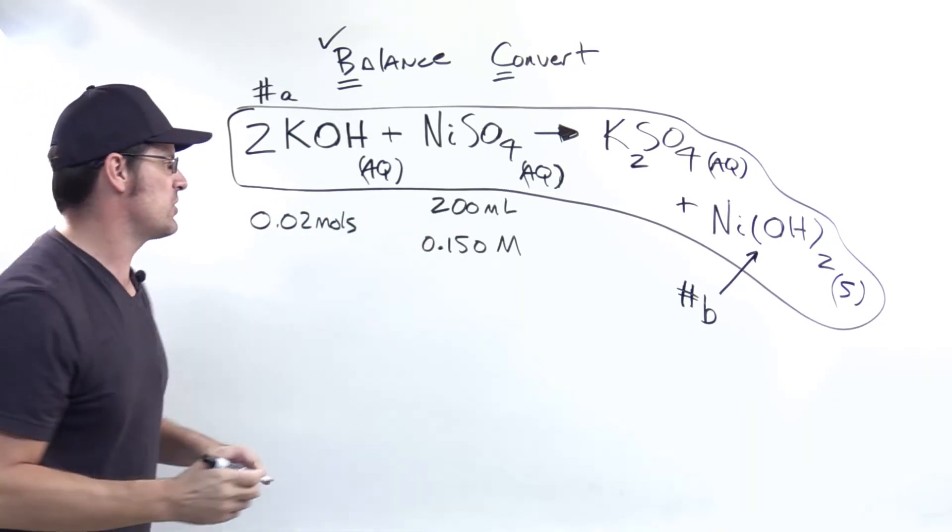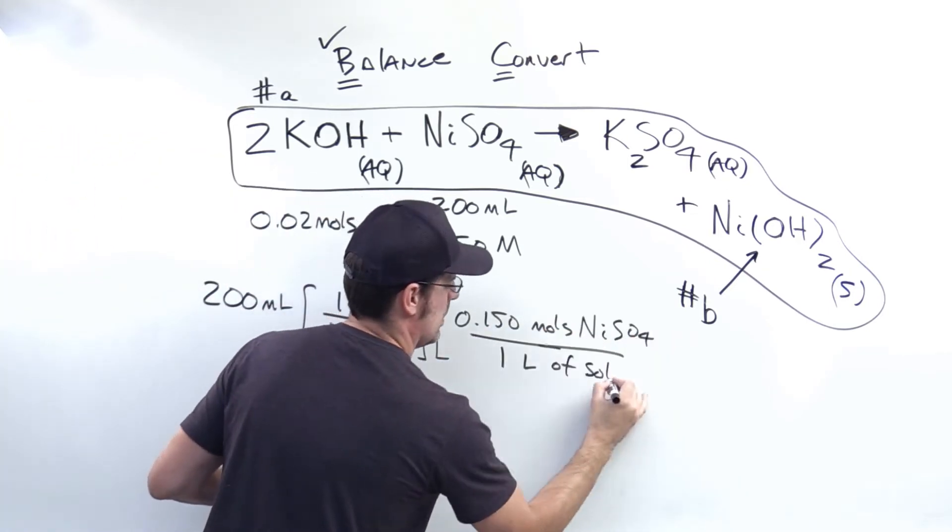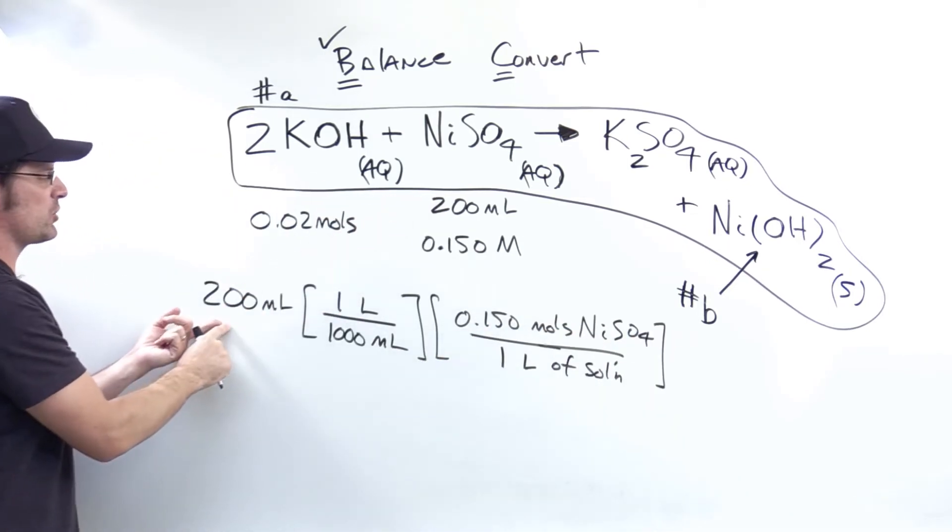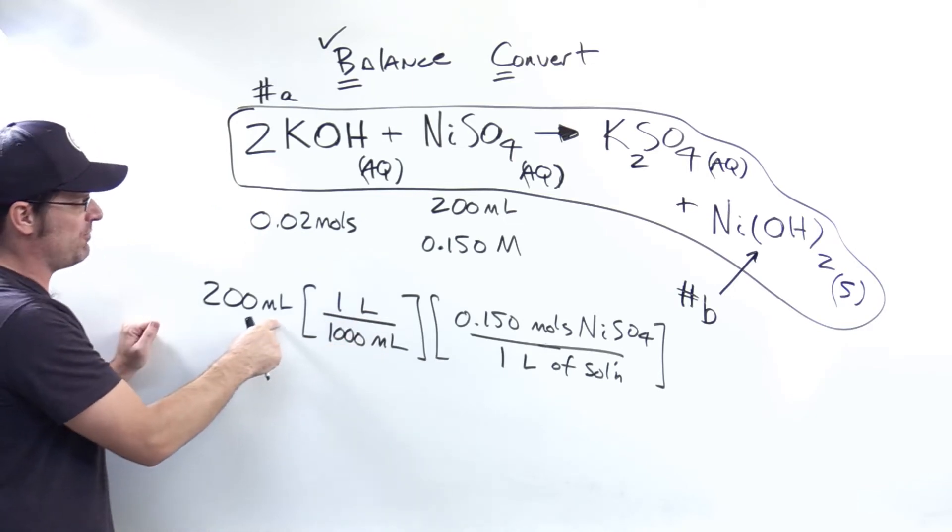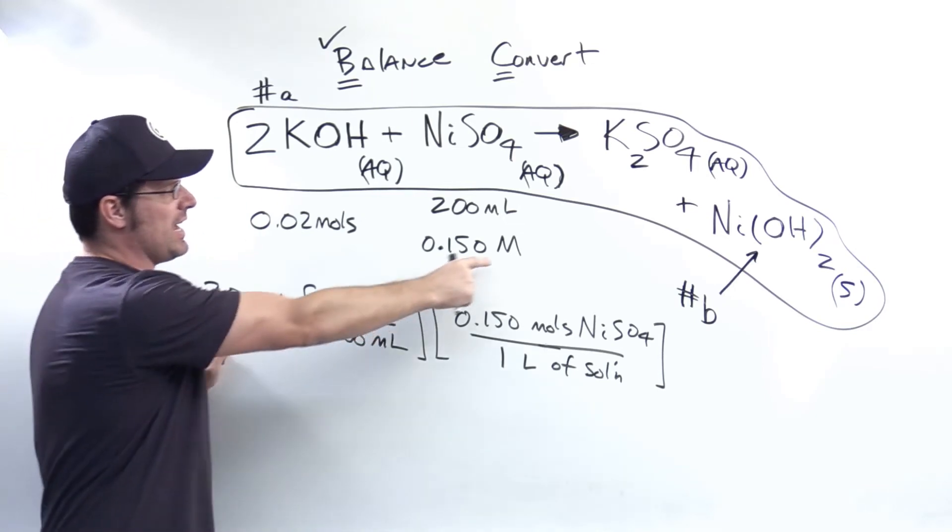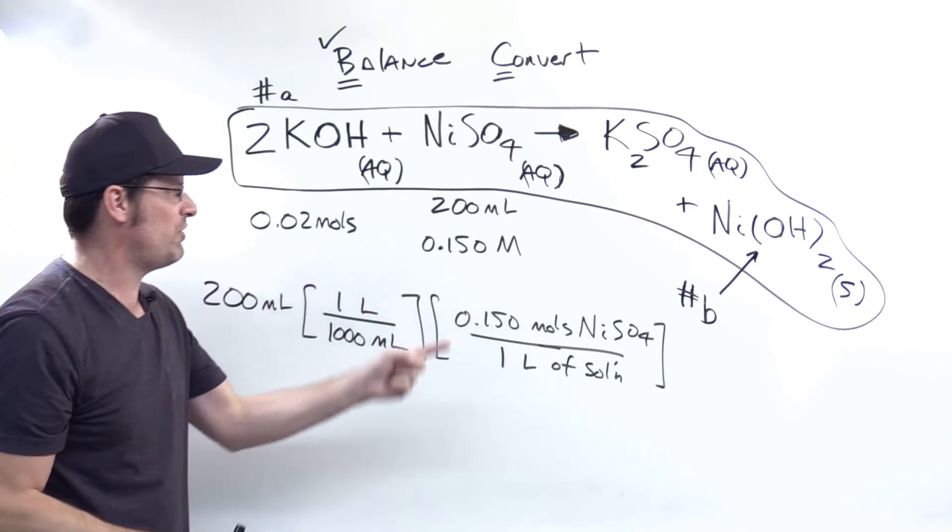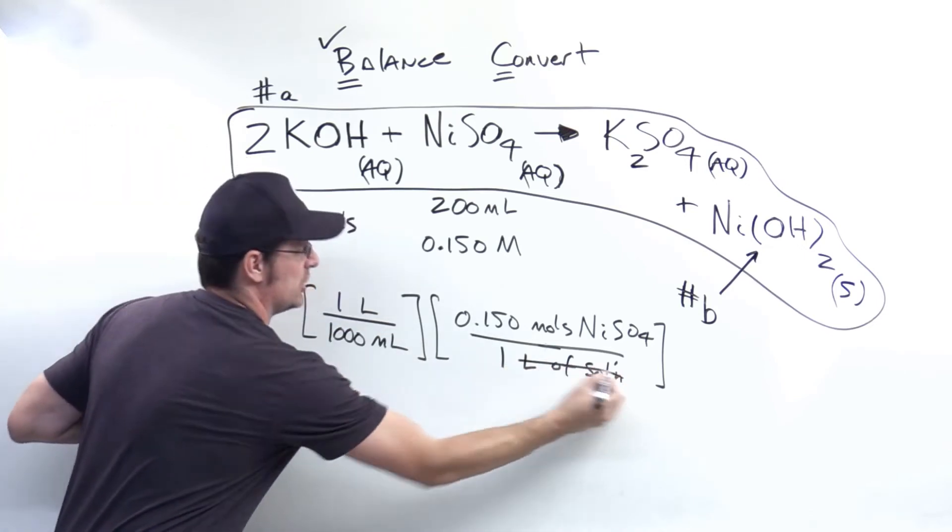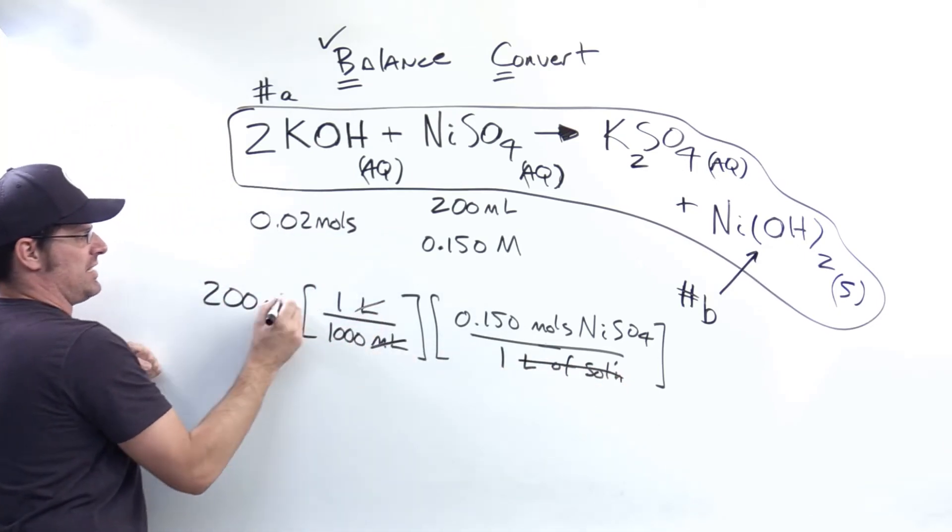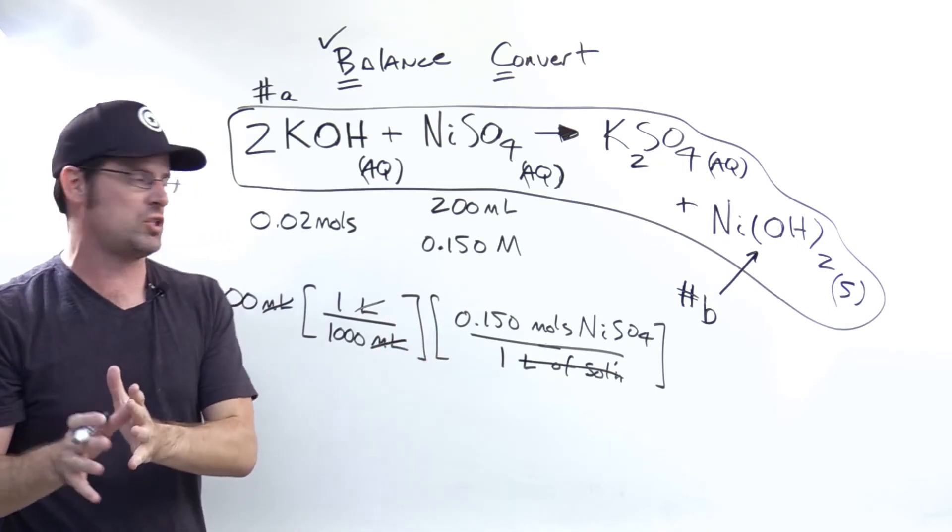Now let's do the same thing for nickel sulfate. Again, I have 200 milliliters of this nickel sulfate solution. I use this as a conversion to jump from milliliters to liters, and then I use my capital M, which is moles nickel sulfate per liter of this solution. Liters of solution cancel out liters up here. Milliliters cancel out milliliters right there.